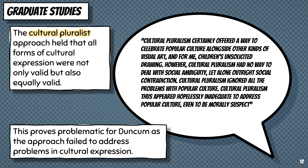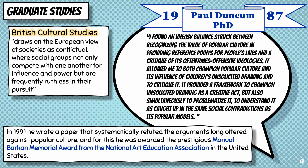Duncan continued his analysis of educational frameworks until he came to British cultural studies. British cultural studies draws on the European view of societies as conflictual, where social groups not only compete with one another for influence and power, but are frequently ruthless in their pursuit. Duncan had found the educational model that would support and champion his visual culture belief. Duncan writes: "I found an uneasy balance struck between recognizing the value of popular culture and providing reference points for people's lives, and a critique of its oftentimes offensive ideologies. It allowed me to both champion popular culture and its influence on children's unsolicited drawing and to critique it. It provided a framework to champion unsolicited drawing as a creative act, but also simultaneously problematize it — to understand it as caught up in the same social contradictions as its popular models."